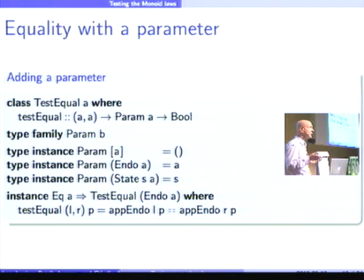If I want to compare state values, I need a starting state value to start the function, to apply the function on and compare the results. So, for State, I have s as the value. Well, with this definition, I can now implement TestEqual for Endo. So, I get the left function and the right function, and the parameter, and then I apply this left function to the parameter and the right function to the parameter, and take the equality of this.